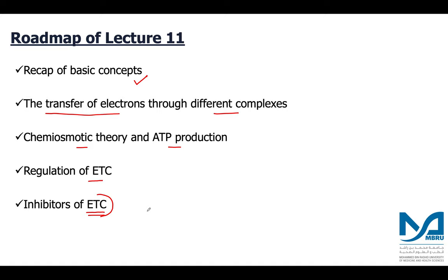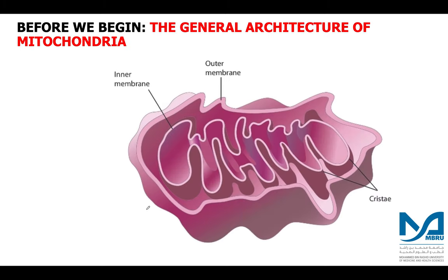You should focus specifically on the inhibitors section because questions are asked mostly from that particular section. Let us start with the general architecture of the mitochondria. The mitochondria has an outer membrane and an inner membrane, and the inner membrane is thrown into folds known as cristae.